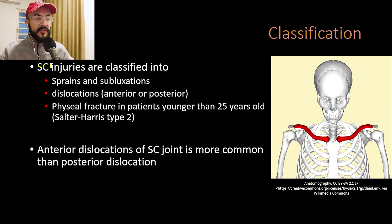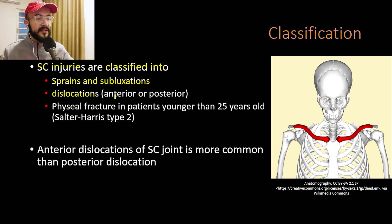SC joint injuries are classified into sprains and subluxations, in which there is ligamentous and joint capsule injury, but it is not complete. These injuries are also classified into dislocations, which include anterior and posterior dislocations. In anterior dislocations, the medial end of the clavicle moves forward anteriorly, and in posterior dislocations, the medial end of the clavicle moves posteriorly towards the mediastinum.